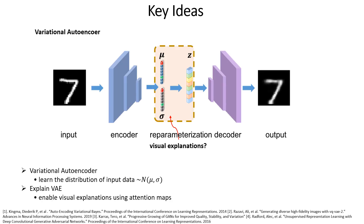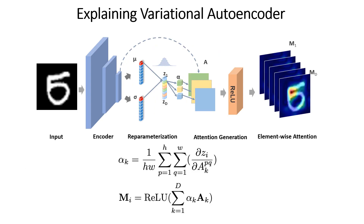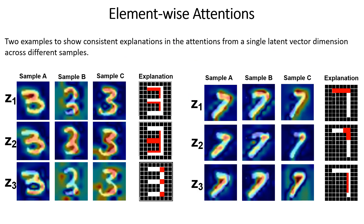Given existing generative models such as VAEs and GANs, our work focuses on vanilla VAEs to generate visual explanations using attention maps. Given a latent vector z, we consider each dimension zi separately, compute gradients with respect to encoder feature maps, and then process them into element-wise attention maps. These examples show that our VAE attentions give consistent explanations across latent dimensions and samples.